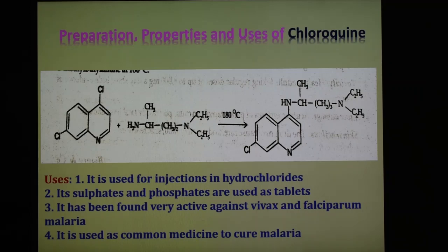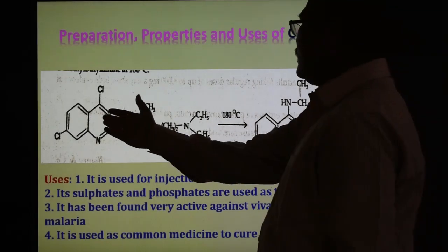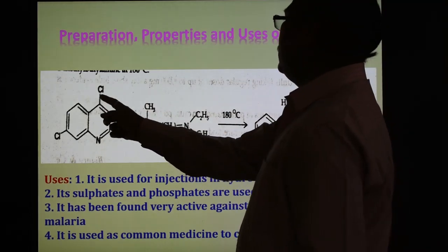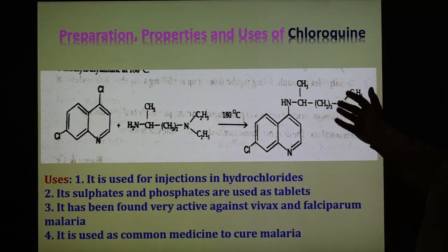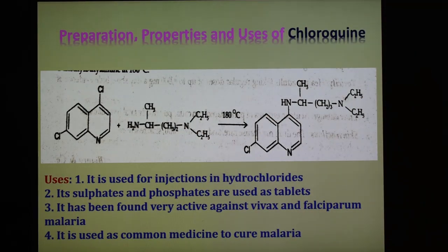Next we are going to see the preparation, properties and uses of chloroquine. Chloroquine is synthesized by the reaction of 4,7-dichloroquinoline and 4-diethylamino-1-methylbutylamine at a temperature of 180 degrees Celsius. The reaction is shown in the slide. The two compounds react — in place of Cl, this amino group gets attached, HCl is displaced, and we obtain the compound known as chloroquine.